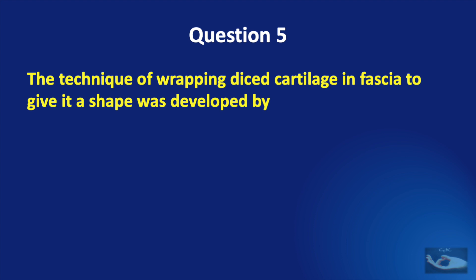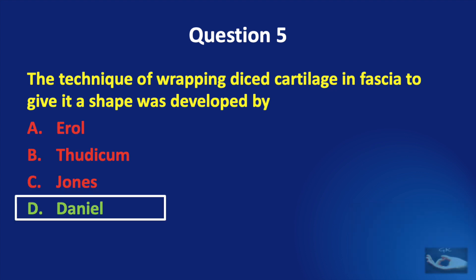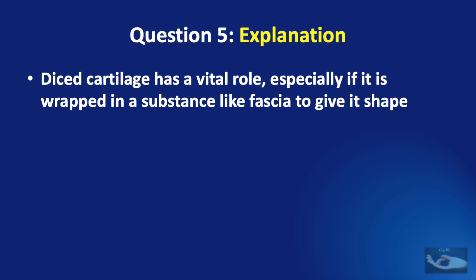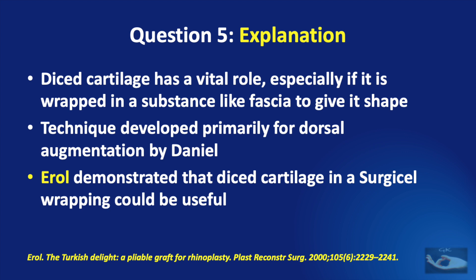Question number 5. The technique of wrapping diced cartilage in fascia to give it a shape, used in rhinoplasty, was developed by: Erol, Thudicum, Jones, or Daniel. The correct answer is Daniel. Diced cartilage wrapped in fascia has a vital role and is used in rhinoplasty. The technique was developed primarily for dorsal augmentation by Daniel. Erol demonstrated that diced cartilage in a surgical wrapping could be useful and called it the Turkish delight.